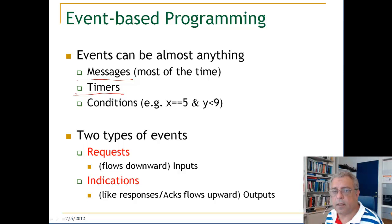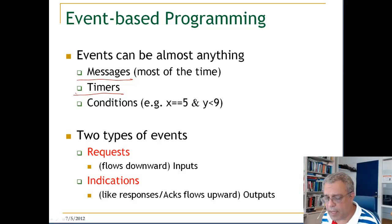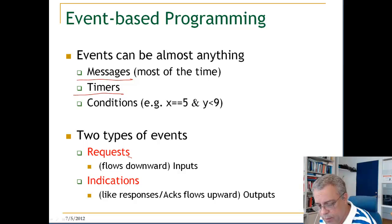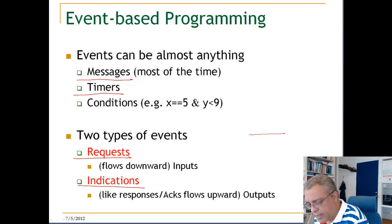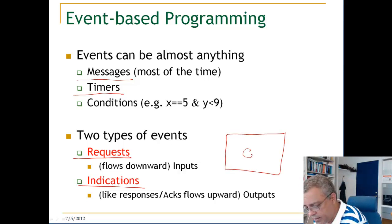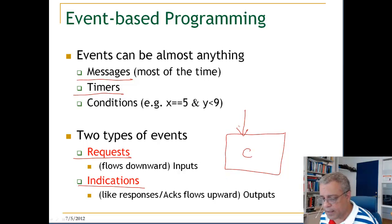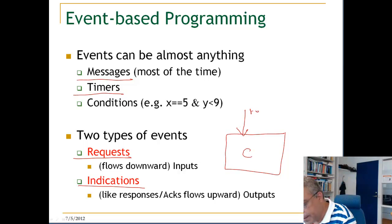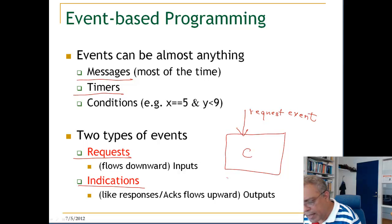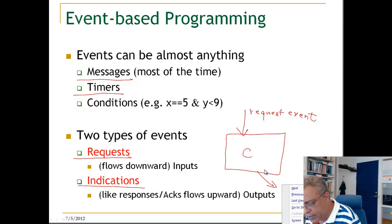A component deployed will have a number of variables representing its state and a number of event handlers. We are going to have two types of events: a request event and an indication event. An event flowing into the component will be a request event. An event triggered inside the component and sent to some other place will be called an indication event.